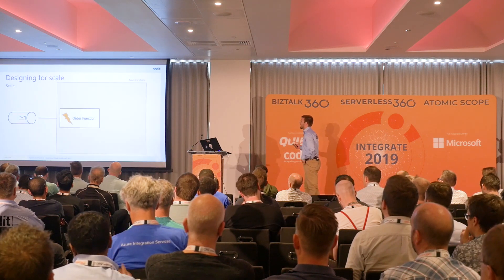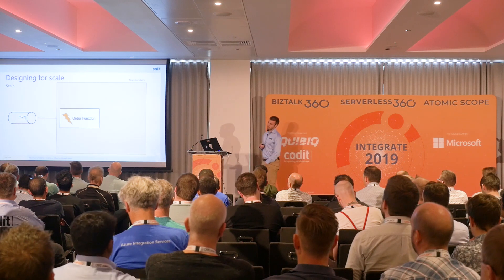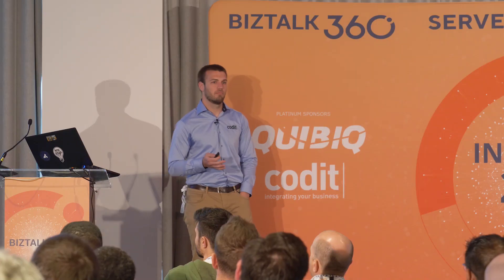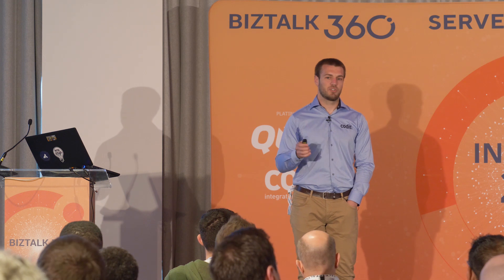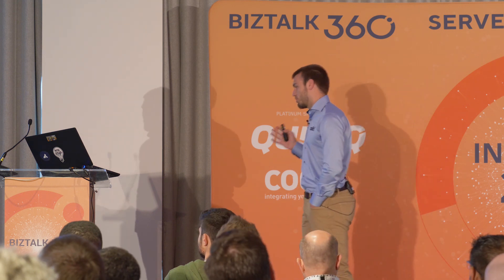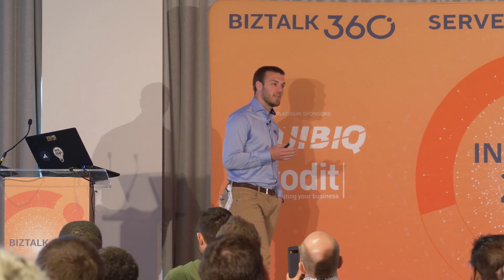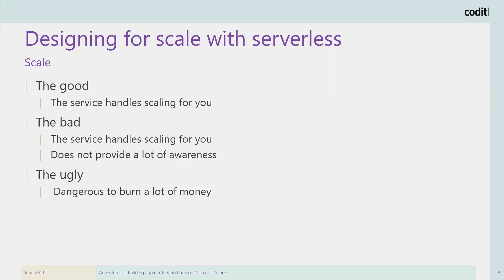Every service has characteristics around how you package, deploy, and scale your application. For example, with Azure Functions taking messages from a queue, Functions will automatically spin up more instances to drain the queue — super simple. The good part is they handle all the scaling for us. The bad part is they handle all the scaling for us — we do not have control. The only thing you can do is read the documentation, learn how it works, and take it into account. For a lot of scenarios that's great; for others, it might not be.